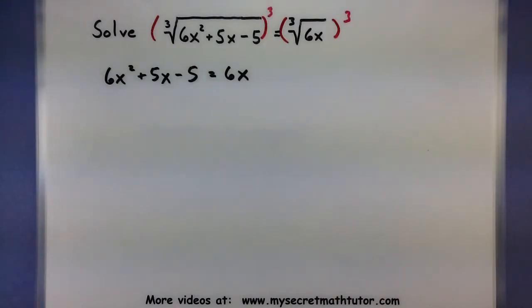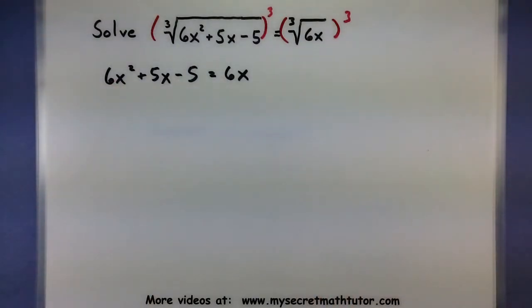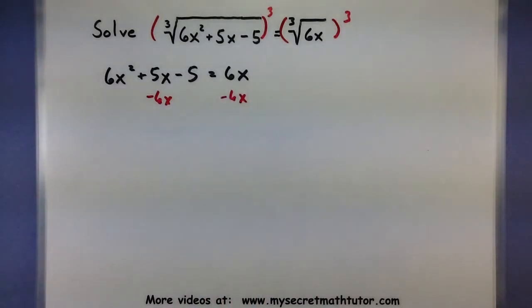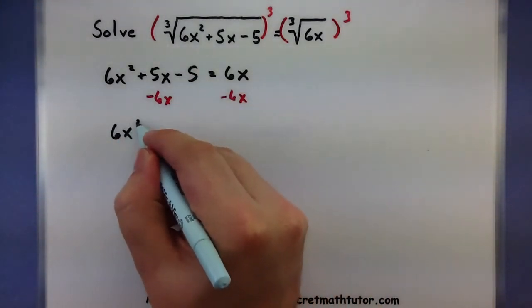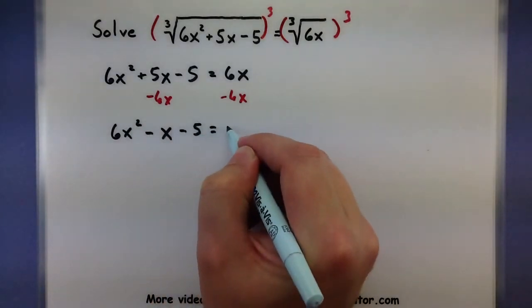All right, so this leftover equation looks like it's quadratic. I got my x squared over here. So we'll subtract that 6x from both sides and continue solving. So minus 6x minus 6x. So I have 6x squared minus x minus 5 is all equal to 0.